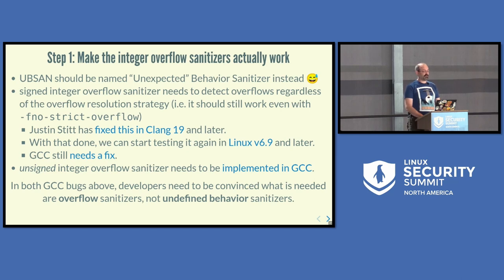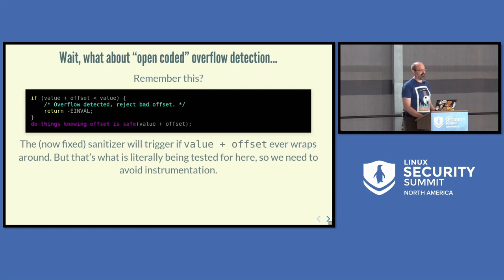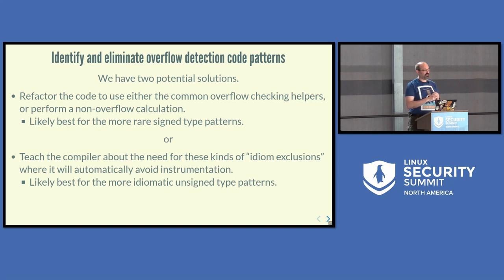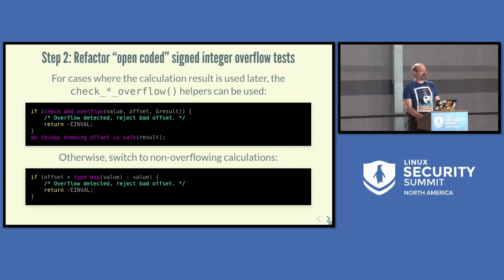Remember the open-coded overflow detection pattern? Now that we've fixed the sanitizer to work, it will actually trigger if offset exceeds value — which is exactly what this test was trying to find. So we have two ways to solve it: either refactor the code to not do that (probably best for signed types because of their history of undefined behavior), or teach the compiler to recognize these idiom exclusions, which is probably more important for unsigned types, since people have been writing wraparound with unsigned types for 50 years.